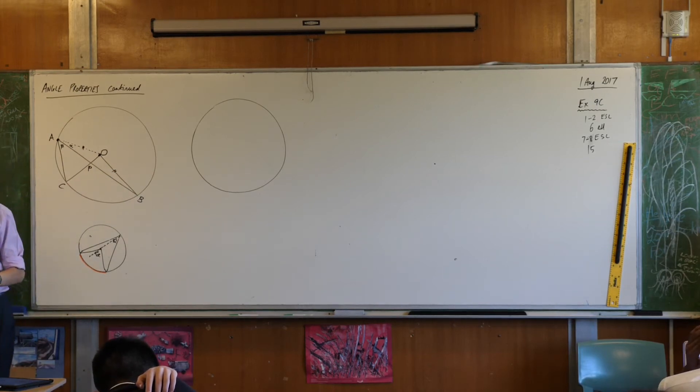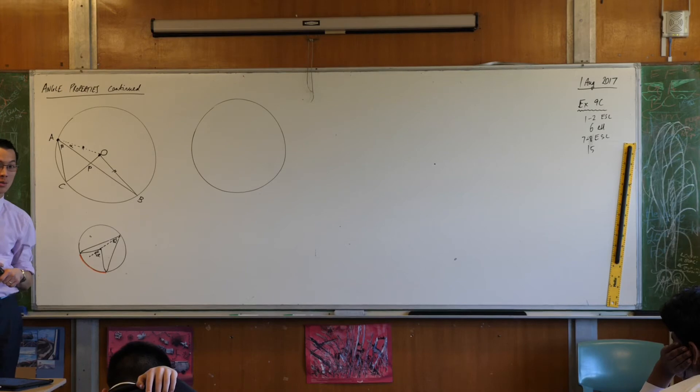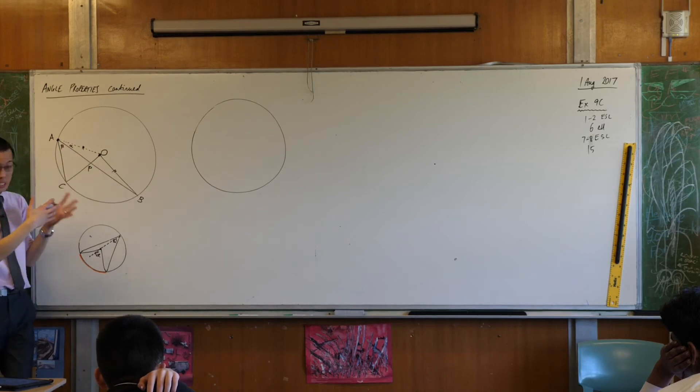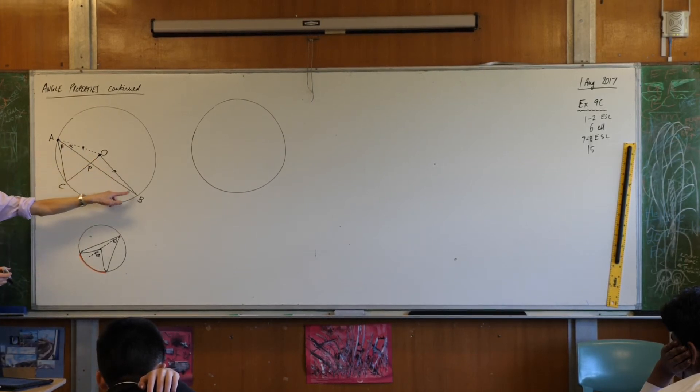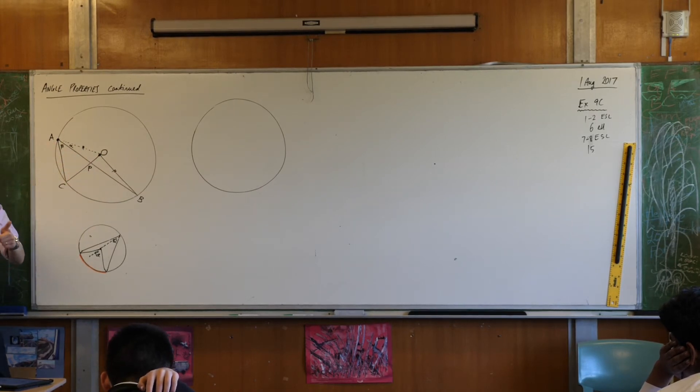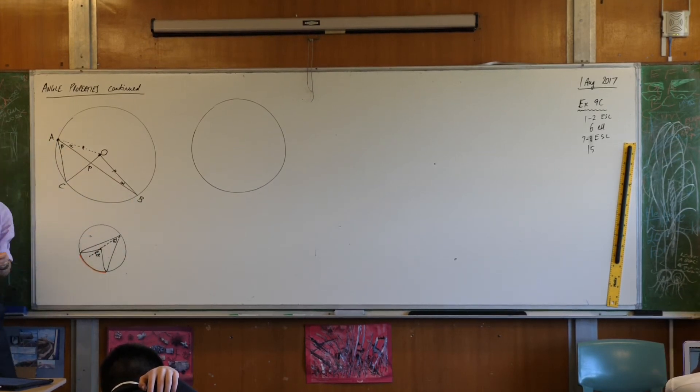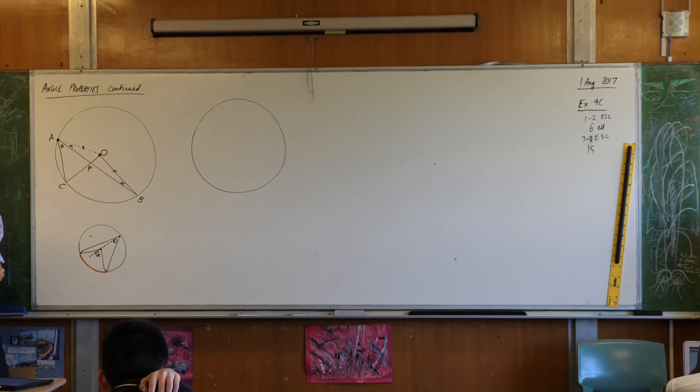So therefore, what statement can I make about angles that goes with that pair of equal sides? Any takers? Everything is named. You don't have to point, you don't have to use vague words, you can tell me which angle you mean. O, B, P is equal to O, A, P. Thumbs up! Those are both the base angles of this isosceles triangle. So that makes that alpha. So far so good.